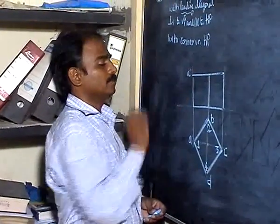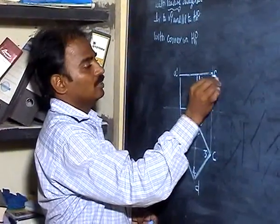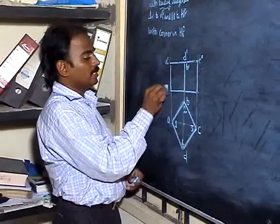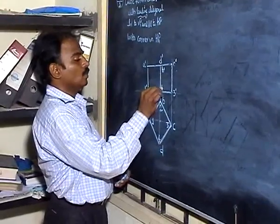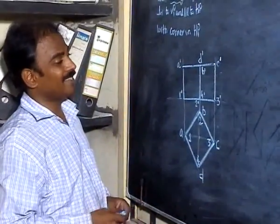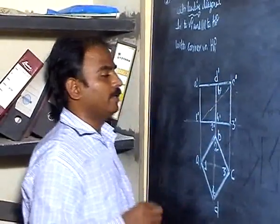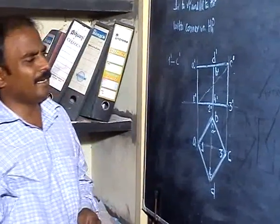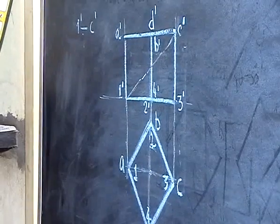In the front view: this is A dash; B dash is not visible, so put it below the line; C dash is visible and D dash is also visible, put them above the line. Then 1 dash is visible, 2 dash is not visible, 3 dash is visible, and 4 dash is also visible. This is the diagonal of the cube — the leading diagonal is identified as the line connecting 1 dash and C dash, which is the leading diagonal for this particular cube.